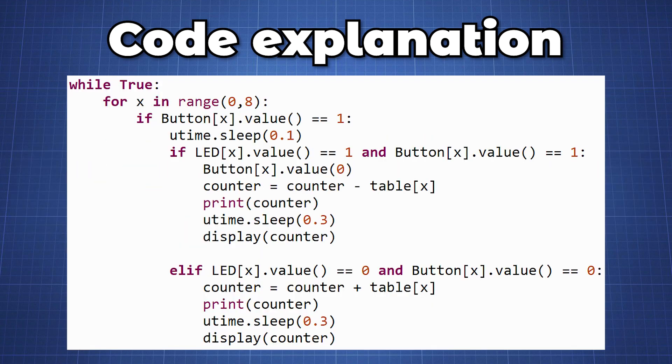In our main loop we will first loop through the 8 buttons to see if any button is pressed. When a button is pressed the value will go to 1. We will first check if the LED value is 1 and button is 1, which means the bit was already set. We will then set the button value to 0, remove the bit decimal value from the table to counter, print out the counter, and after a short delay call the display function which we pass the value of counter.